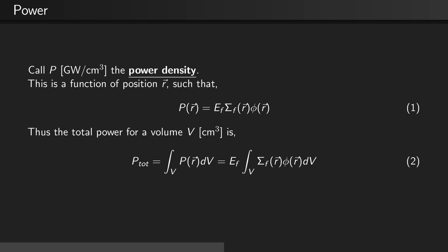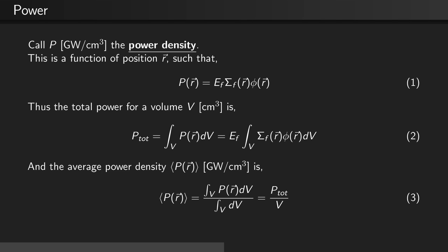Therefore, the total power for a volume v in centimeters cubed is equal to the integral of p as a function of position over all volumes. The average power density, denoted by angle bracket p of r close angle bracket, is equal to the total power density divided by the volume.